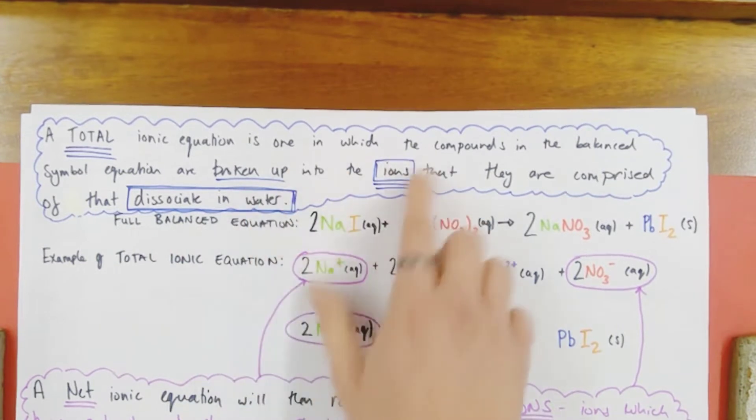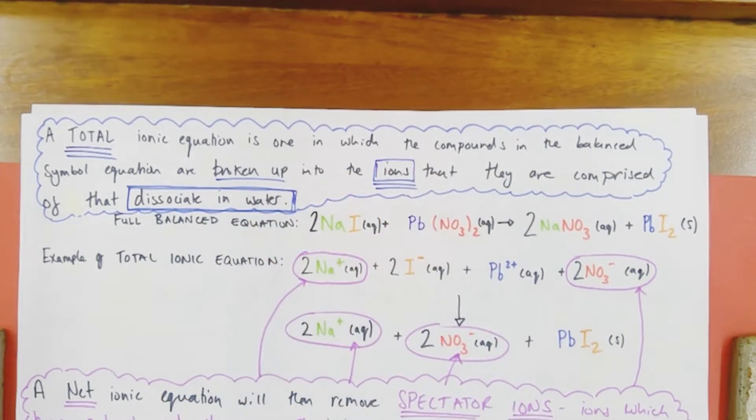Let's first of all deal with the total ionic equation. A total ionic equation is one in which the compounds in a particular balanced simple equation, so a reaction, are broken up into their constituent ions, the ions that make up those compounds, as long as that compound can dissolve and dissociate its ions in water.